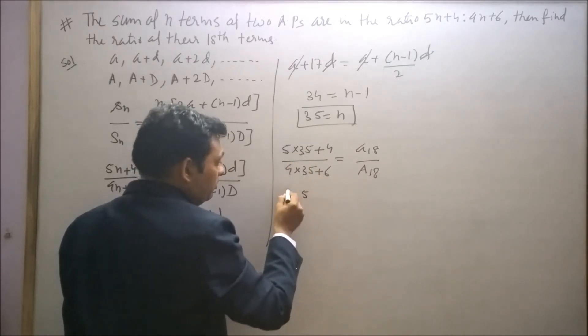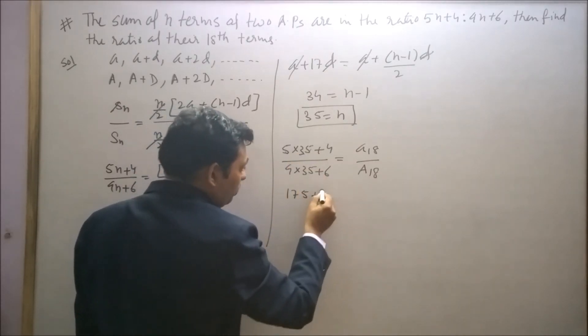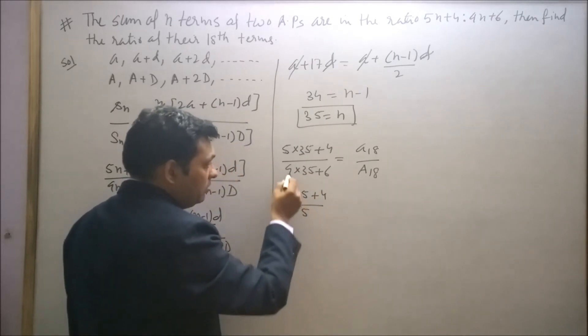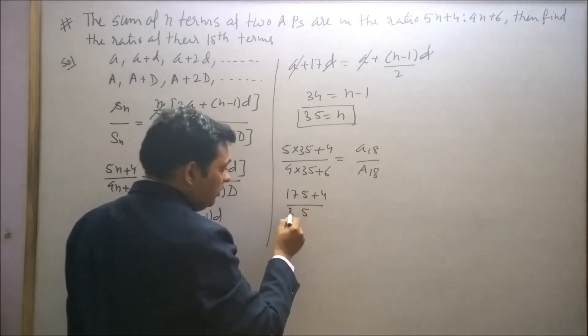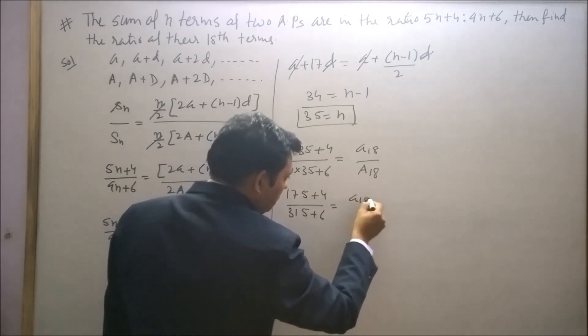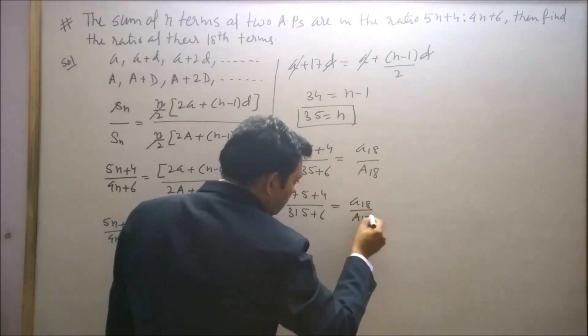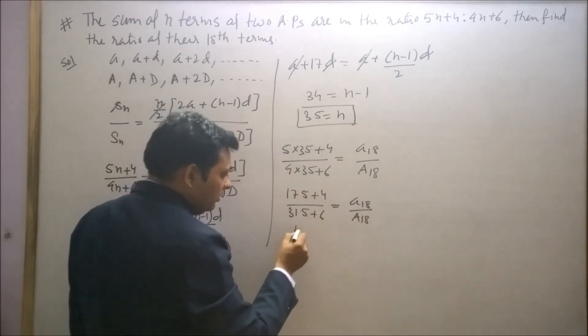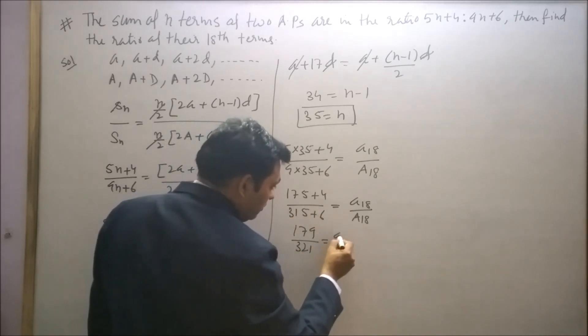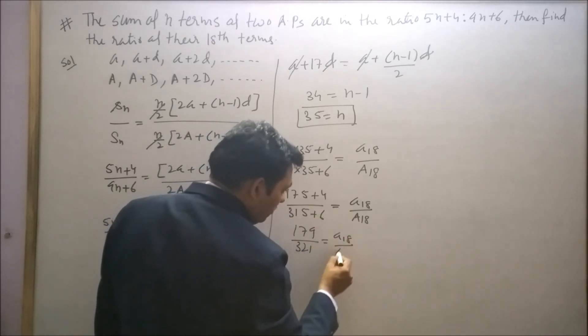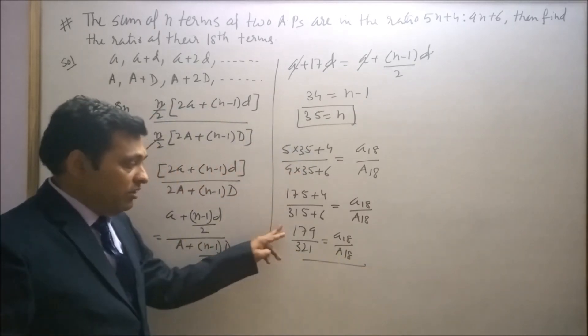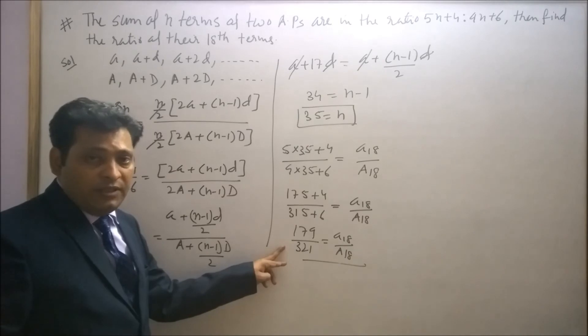5 into 35 is 175 plus 4, 9 into 35 is 315 plus 6. This will be the ratio of the 18th term. So this will be 179 and this will be 321. So the ratio of the 18th term is 179 upon 321.